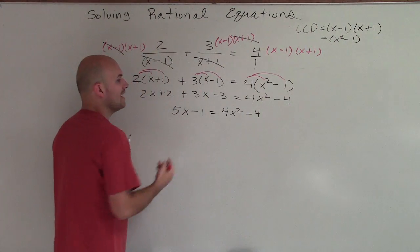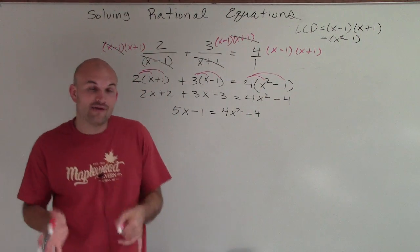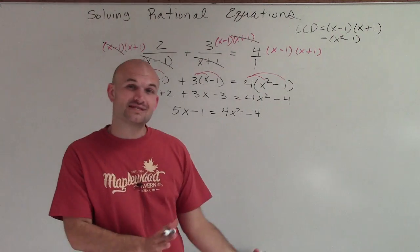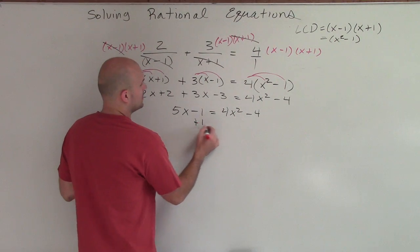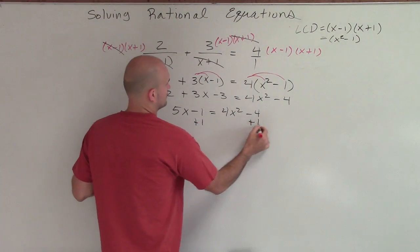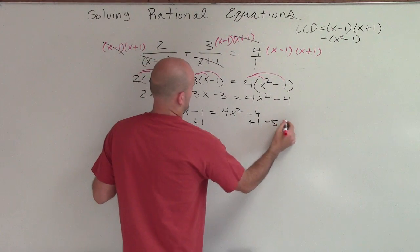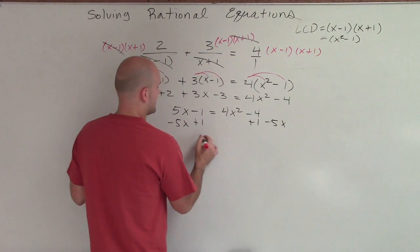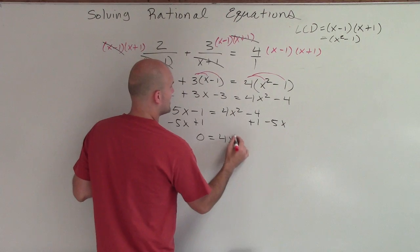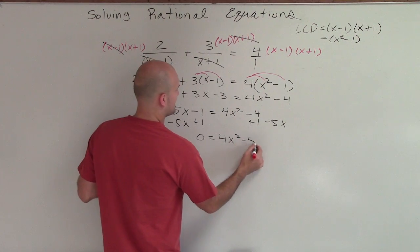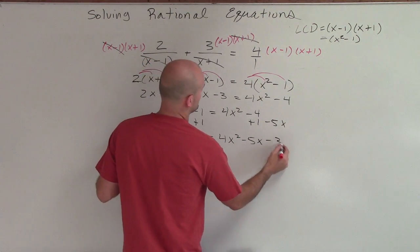Now I have a quadratic. So therefore I need to get all my variables to the same side so I can solve. I'll add the 1 and subtract the 5x, giving me 0 equals 4x squared minus 5x minus 3.